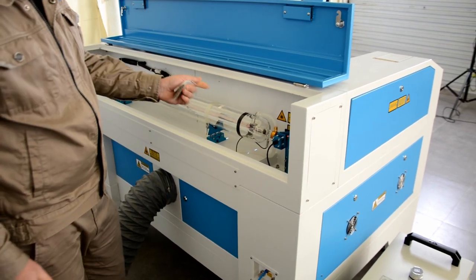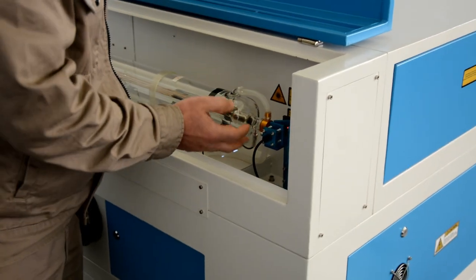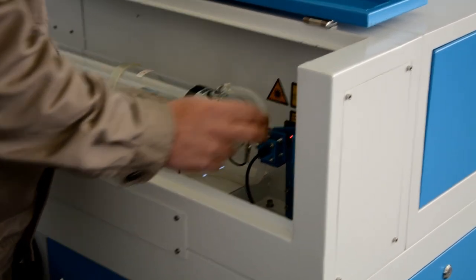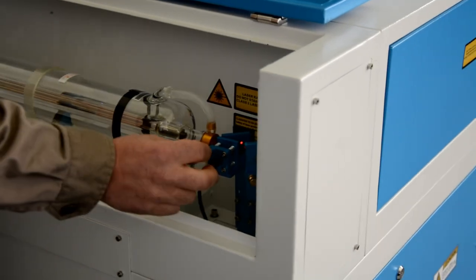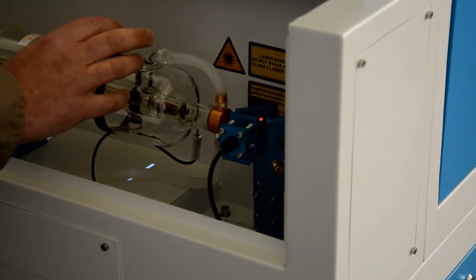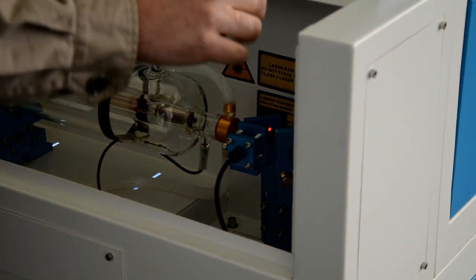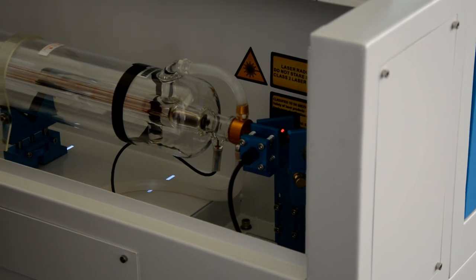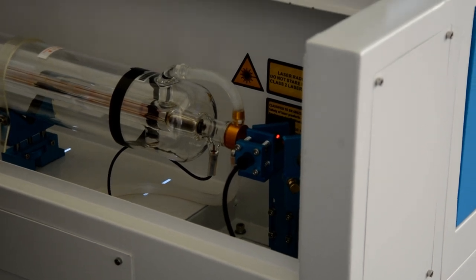Now we have the laser tube here with the water cooling running through it. And right here we have the red dot running through a beam combiner into your first mirror. There's some small adjustments here on the actual red dot. This is actually completely independent of the laser tube. So this is actually combining this in with your laser and firing it through around. It gives you a good approximation of where your laser beam is going to be going. And it can be tuned in quite tight.